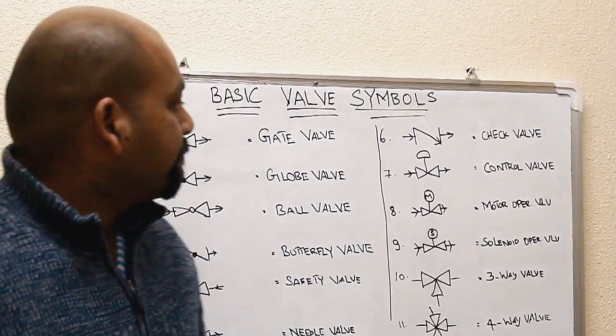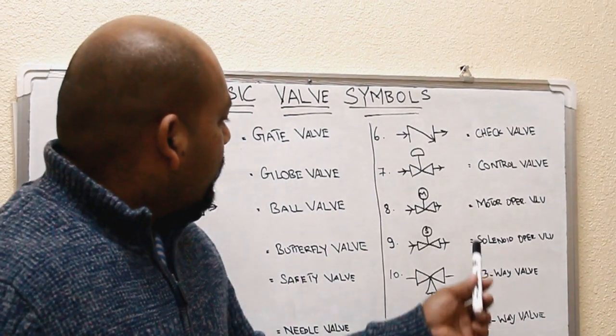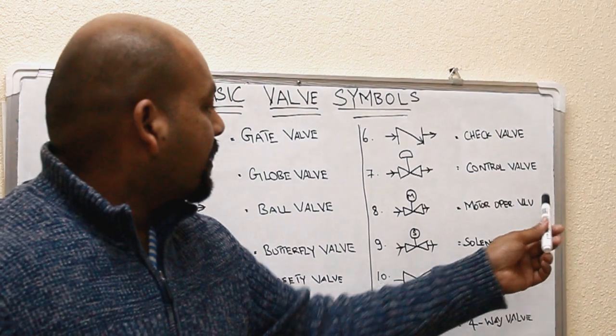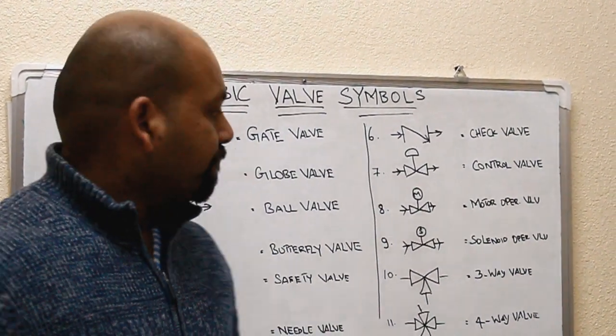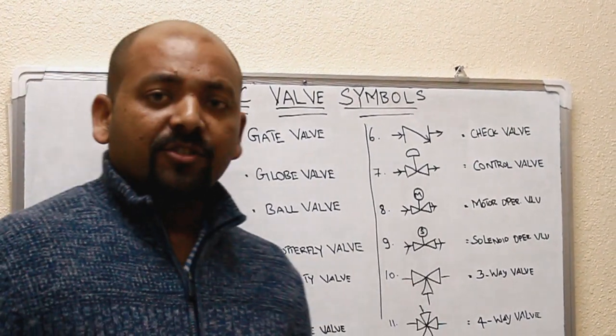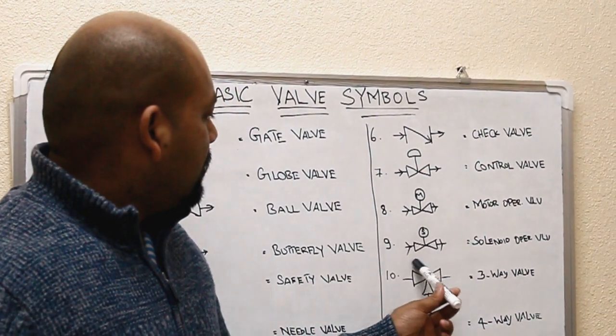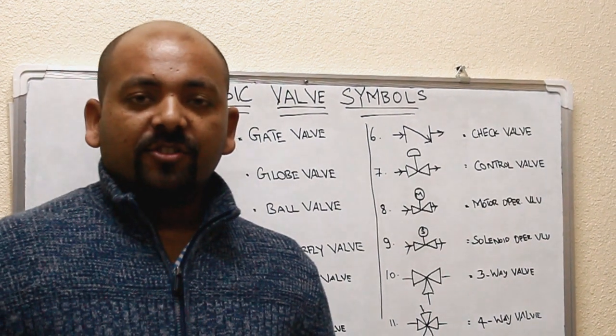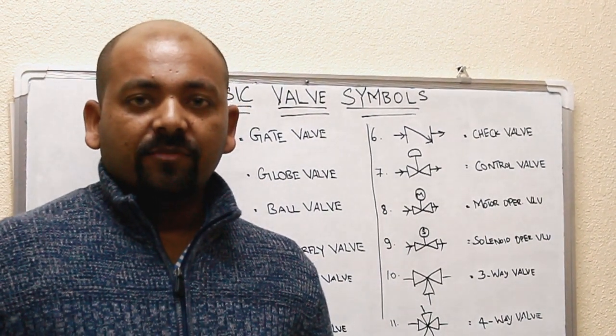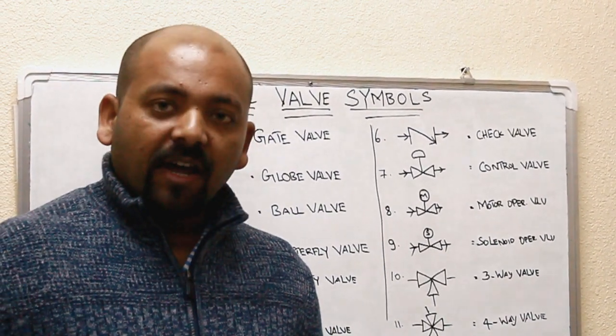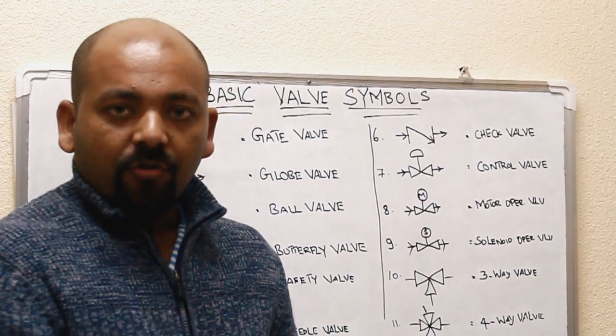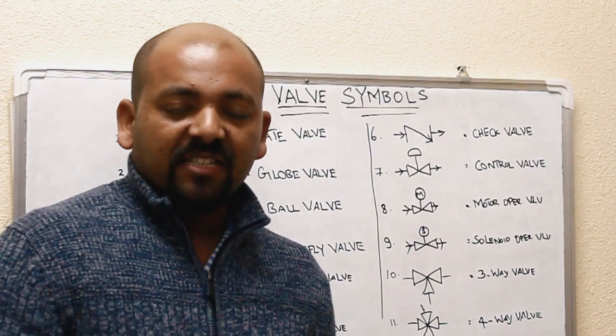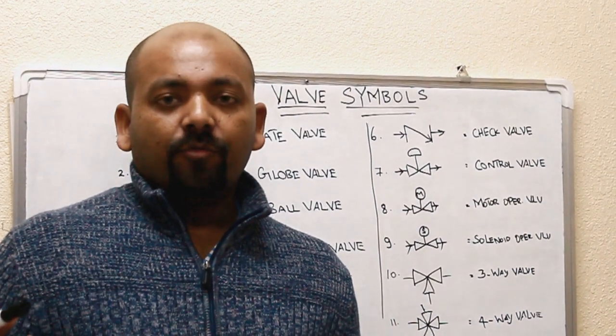And next, the eighth one, this symbol is motor operated valve, the valve which is operated with a motor. The ninth one, the solenoid operated valve. The tenth one, the three-way valve. The three-way valve consists of three ports. It will divert the flow to another pipeline, and again it's used to mix two fluids or two liquids into one line. That's why it's called three-way valve.